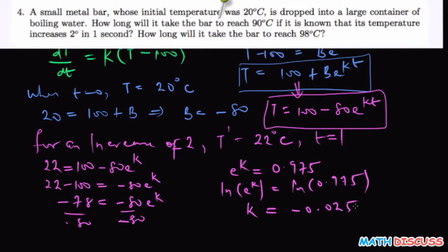Yeah, so now we have been able to find our k to be equal to negative 0.025. But our aim is not to find k. Our aim is to find the time when the temperature reaches 90 degrees centigrade.